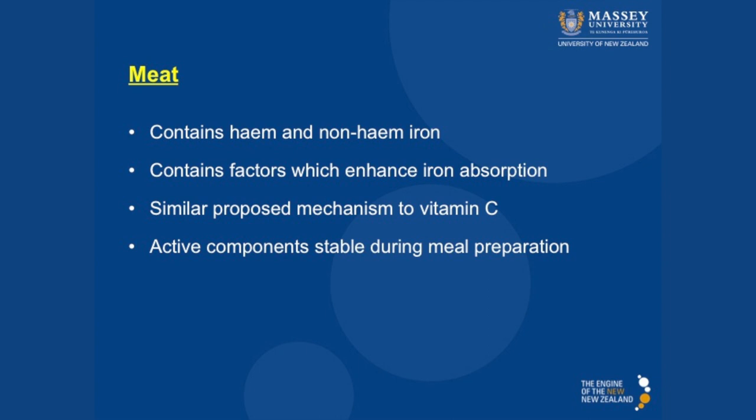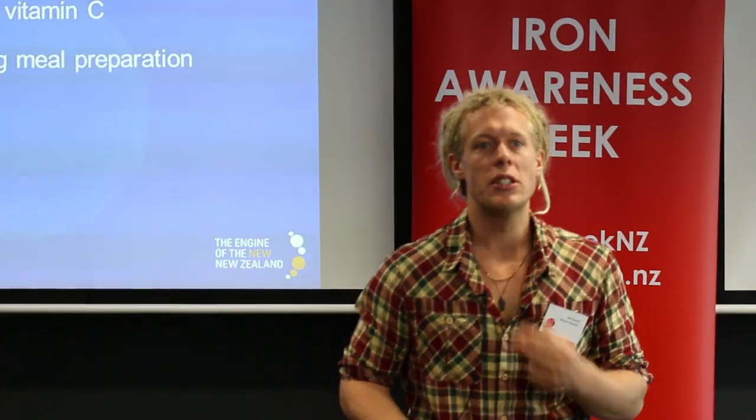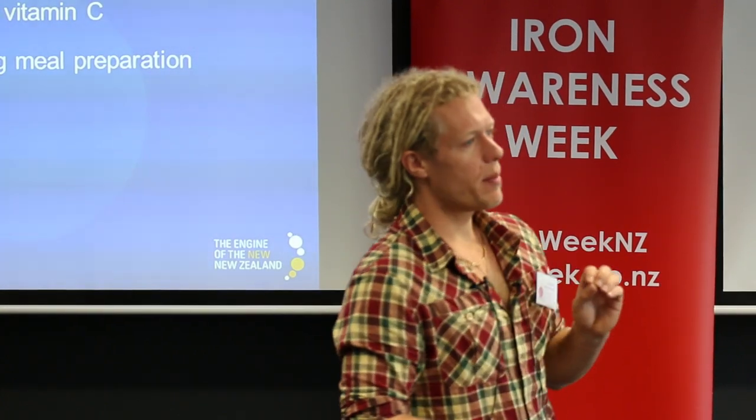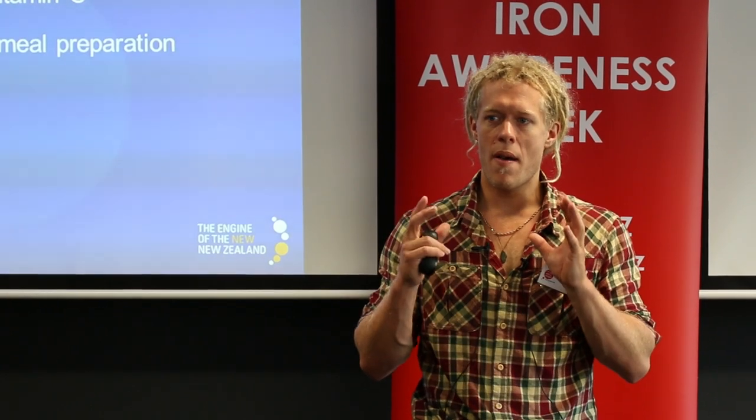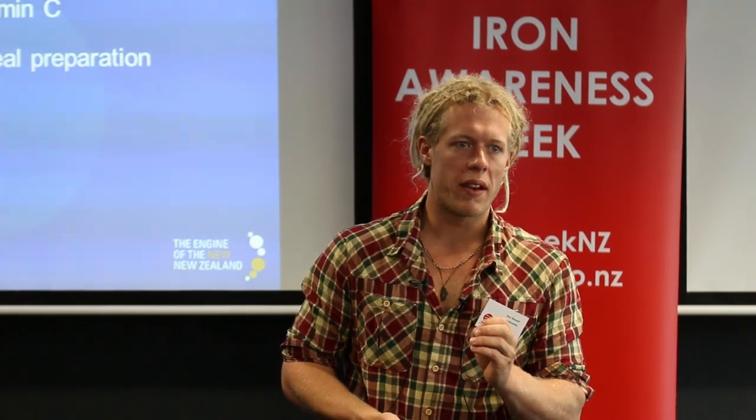Meat works similarly to vitamin C. Meat contains heme iron and non-heme iron, but it also contains factors that enhance non-heme iron absorption. When I say meat, I don't just mean red meat — I also mean pork, chicken, fish. The mechanism seems to be similar, but the problem is we don't actually know what the factor is; we call it the meat factor. It seems to have a protein component, a carbohydrate component, and a lipid component, and it seems that one component isn't as strong as the combination of all three. So eating the entire meat rather than a small component of it seems to have a stronger enhancing effect. It seems to also bind iron and protect it from chelation by inhibitors, and to promote iron solubility and keep it in the ferrous form. The good thing about the meat factor is it is heat stable, so you don't have to be as careful when preparing it.